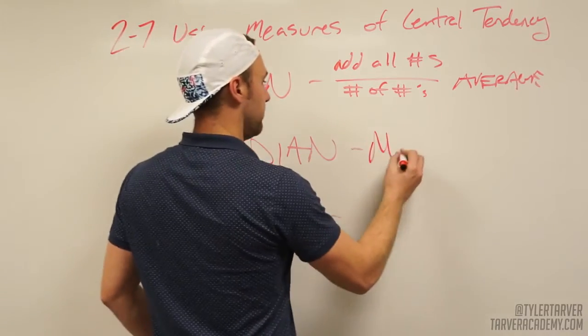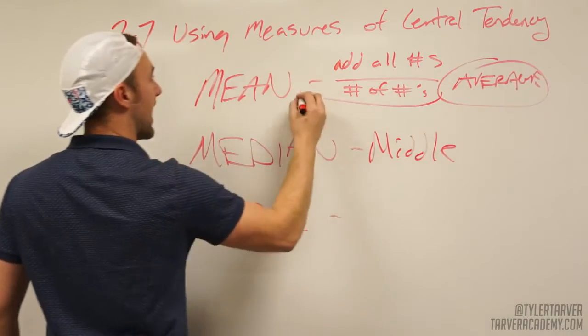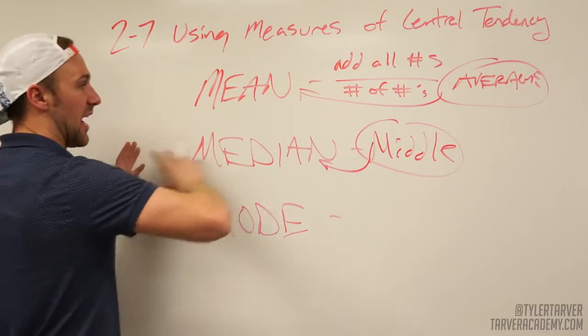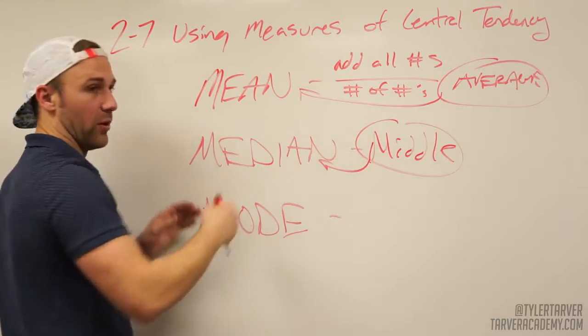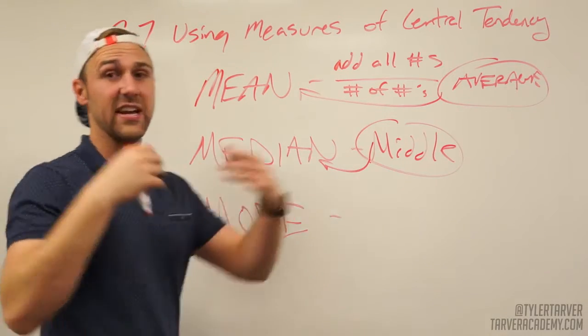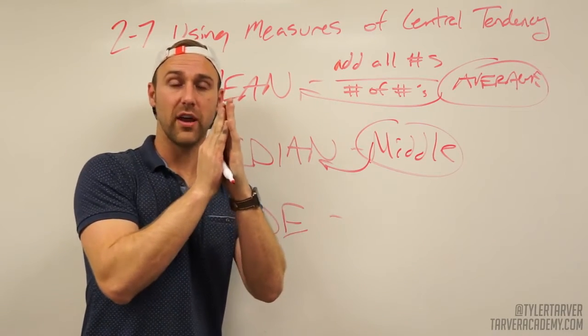Median - that's the middle. If you take all your numbers, line them up in a row, and you pick out the middle one. You put them in order, pick out the middle number. Say you have an even number, you've got like ten numbers - well then you take the two middle numbers and you find the middle number between them. Okay, you average those together.